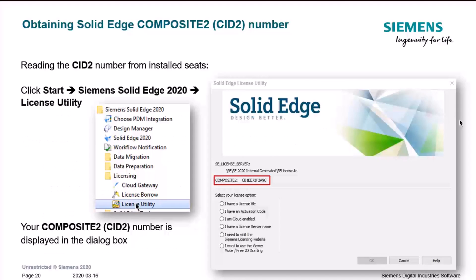The first method — reading the CID2 number from installed seats — is quite easy. Go to Start > Siemens > Solid Edge 2020 (or 2019) > License Utility. You can read the Composite 2 CID2 number right underneath the license server information.